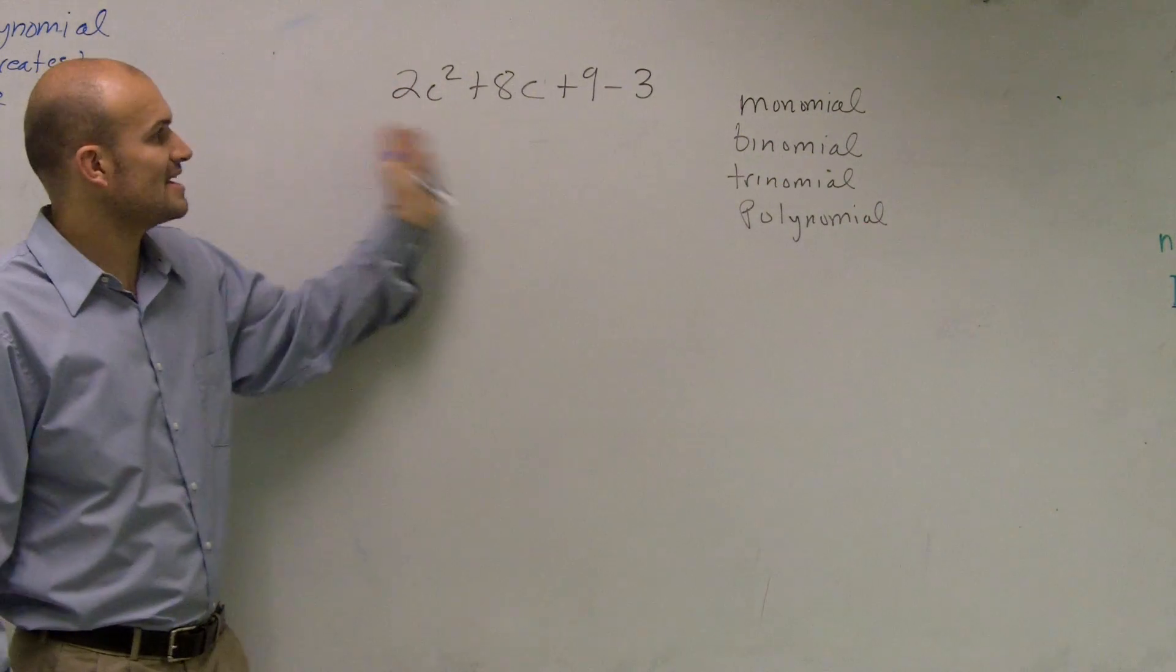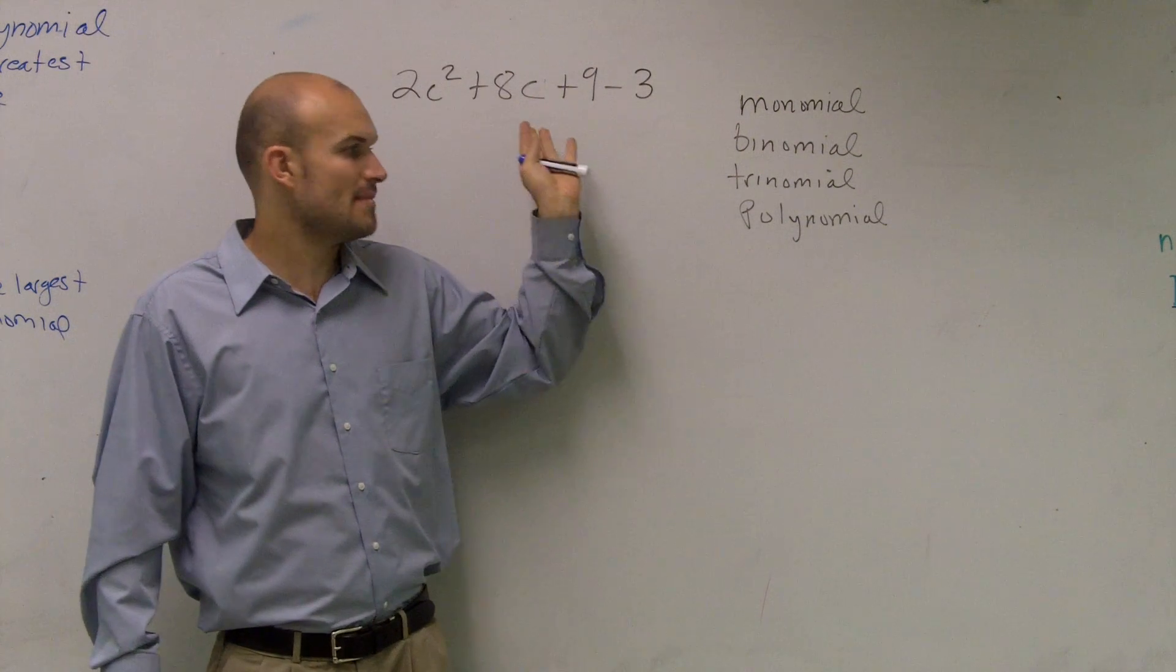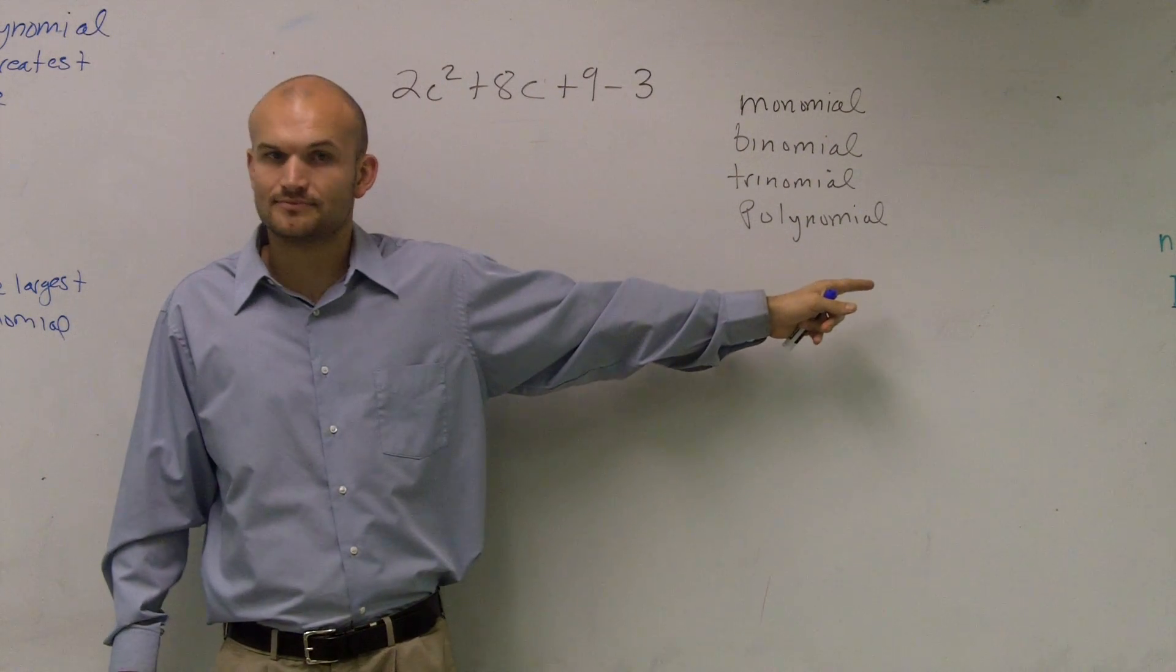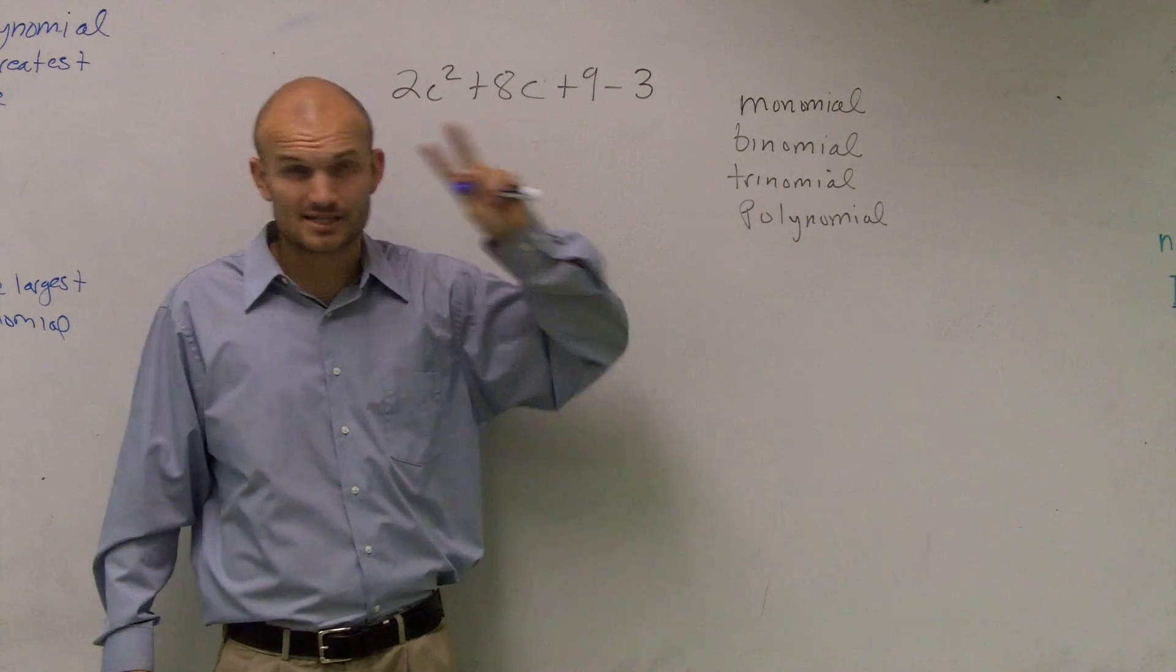Automatically you might say, oh, this has four terms and four monomials, so therefore it's a polynomial. Which, yes, it is, because it's at least two or more.